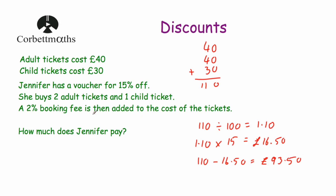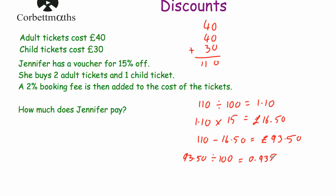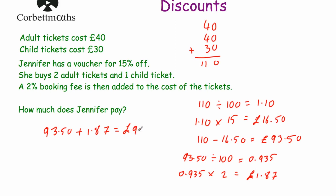A 2% booking fee is then added to the cost of the tickets — as sometimes happens when buying tickets online. So we need to work out 2% of £93.50 and add it on. Divide by 100 to find 1%: £93.50 ÷ 100 = 0.935. Then multiply by 2 to find 2%: 0.935 × 2 = £1.87. There's a £1.87 booking fee, which we add to the discounted price: £93.50 + £1.87 = £95.37. So Jennifer has to pay £95.37.